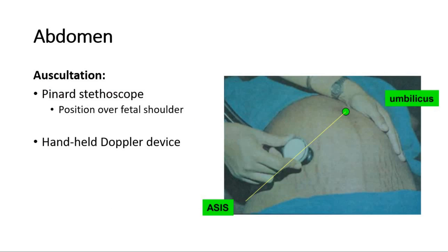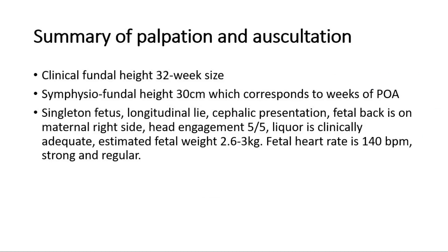After palpation, we perform auscultation to listen for fetal heart sounds. The fetal heart sound can be heard using an ordinary stethoscope or Pinard stethoscope. If not clearly heard, we can use a handheld Doppler device, also known as Doptone. As a summary example, on abdominal examination: the clinical fundal height is 32-week size, symphyseal fundal height is 30 cm corresponding to the weeks of period of amenorrhea. There is a single-fetus, longitudinal lie, cephalic presentation. The fetal back is on the maternal right side, head engagement five-fifths palpable, liquor is clinically adequate, estimated fetal weight around 2.6 to 3 kg, and the fetal heart rate is 140 bpm, strong and regular.